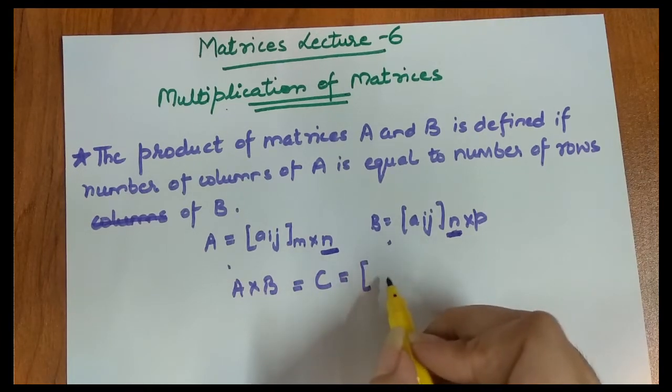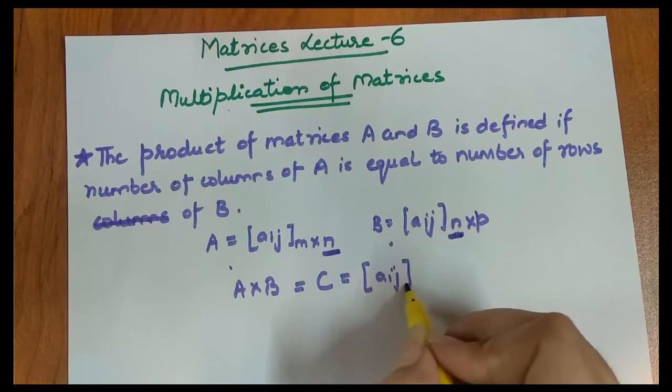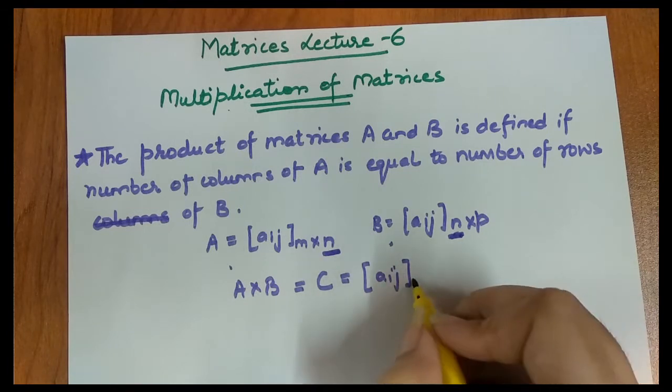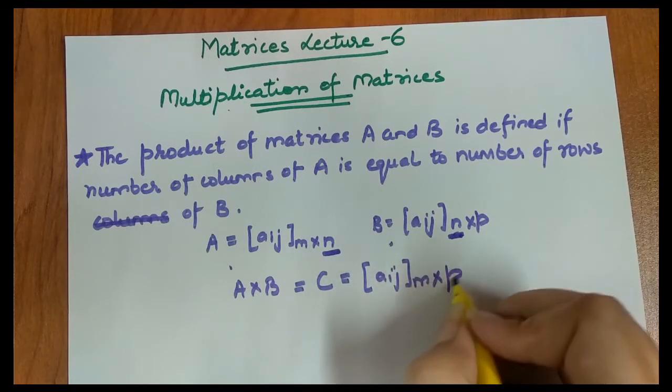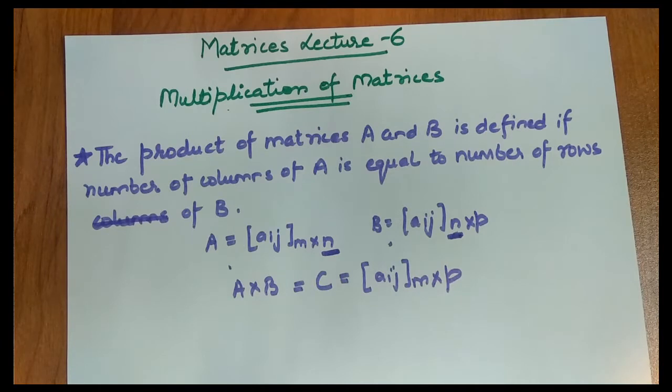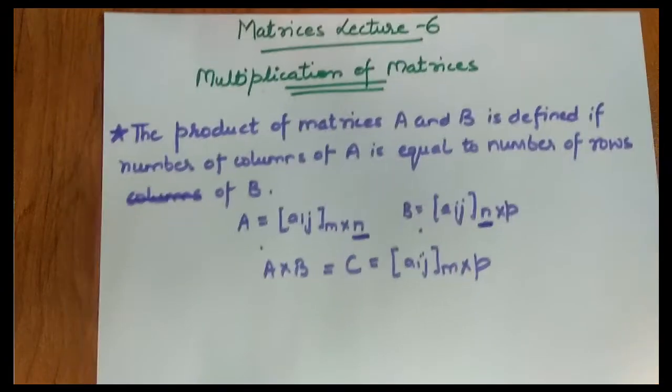So in this matrix, what will be the order of matrix C? It will be m cross p. This matrix C is equal to m cross p, the same thing.